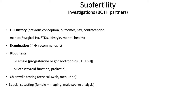Examination would only be done if the history recommended it — height and weight for BMI, appearance such as acne or hirsutism, and bimanual examination. Blood tests for females might include progesterone if they have regular periods, or gonadotrophins — LH or FSH — if their periods are irregular. For both males and females you'd test thyroid function and prolactin, and chlamydia testing for both as well.